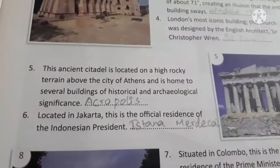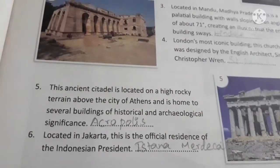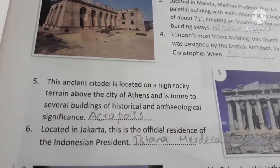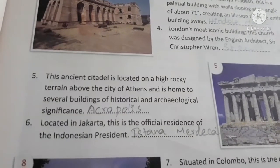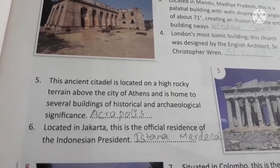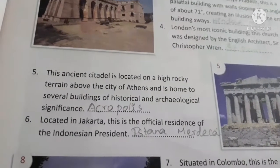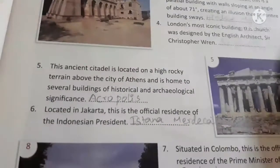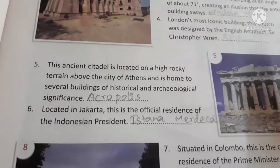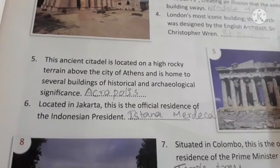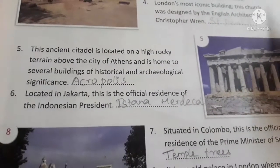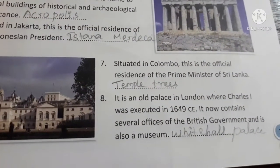This ancient citadel is located on a high rocky terrace above the city of Athens and is home to several buildings of historical and archaeological significance — it is the Acropolis. Located in Jakarta, this is the official residence of the Indonesian President — it is Istana Merdeka.